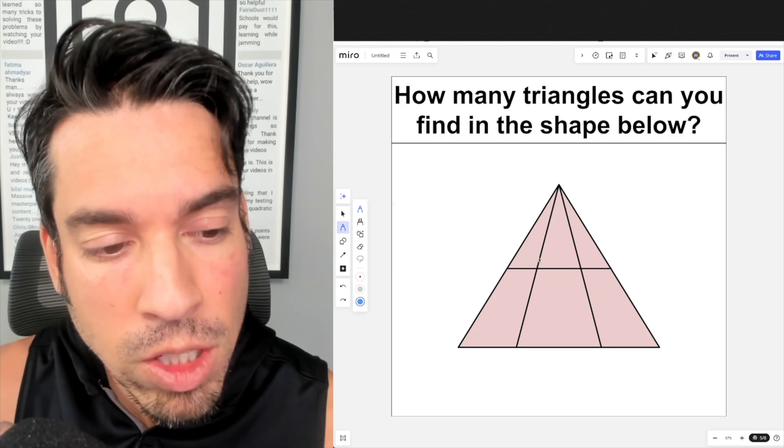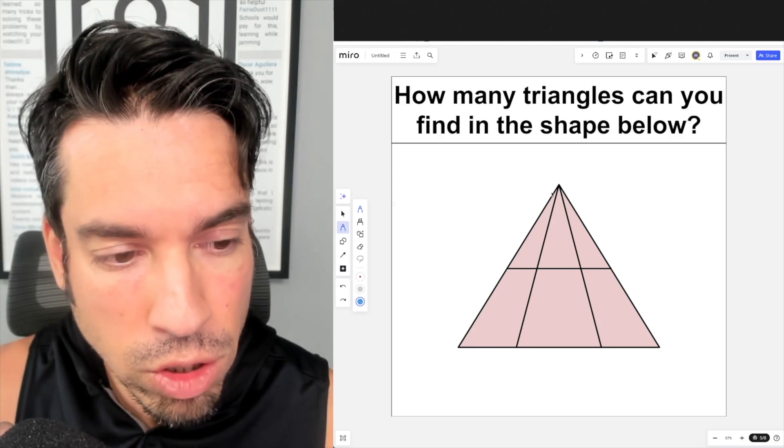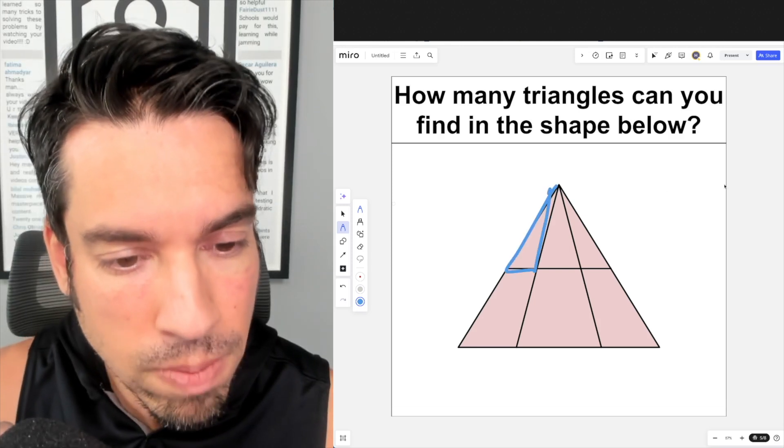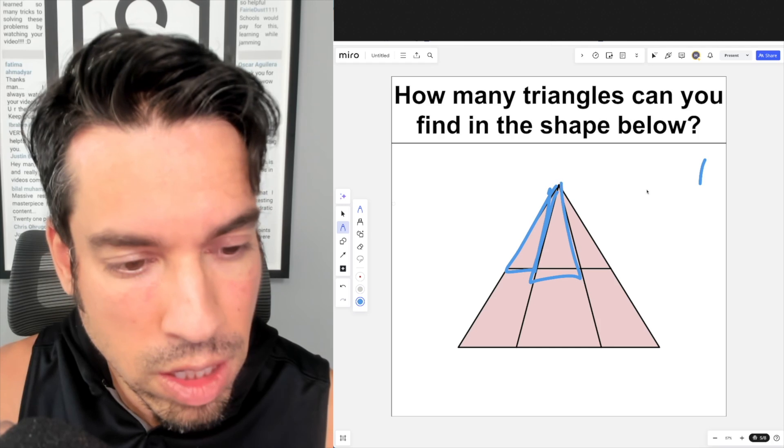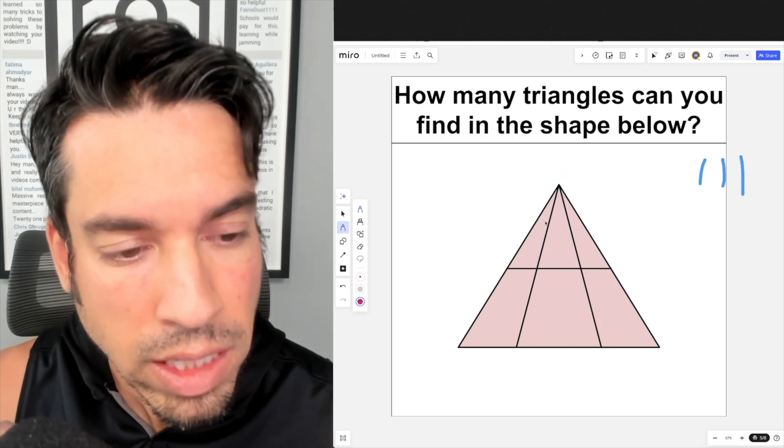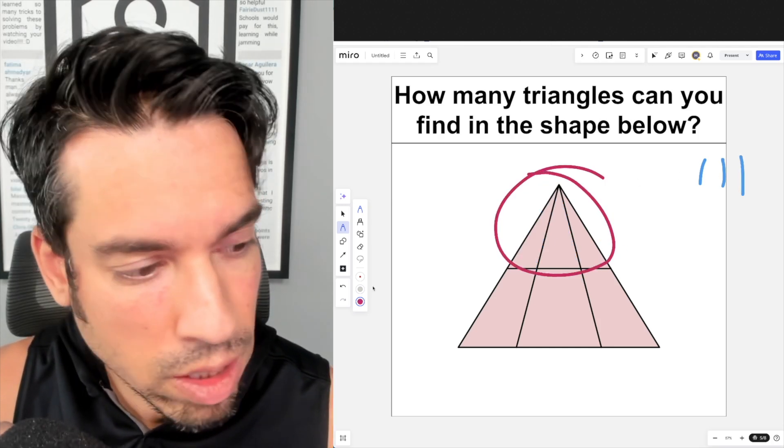And I see another one here. Next, I'm going to go slightly bigger but still in this upper triangle. So I see one here and another one here. Last but not least for this top one, I see the entire triangle like that.